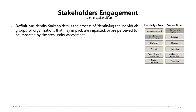The first process we will be conducting in this knowledge area will be to identify the stakeholders who we are going to analyze and communicate with later on. This process is part of the stakeholders engagement knowledge area and is part of the first process group, defining and aligning. It can be defined as the process of identifying the individuals, groups, or organizations that may impact, are impacted, or are perceived to be impacted by the area under assessment.